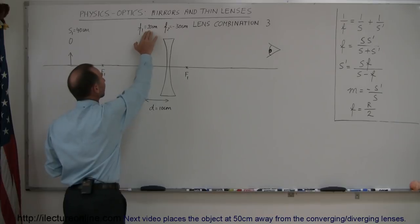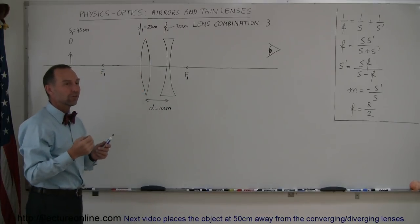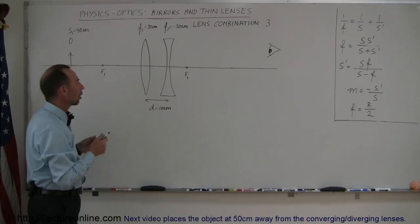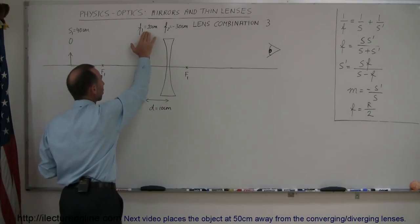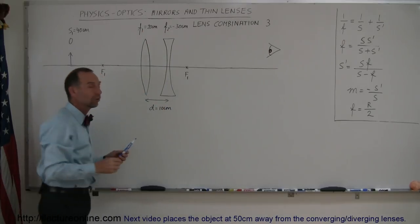The smaller the focal length, the stronger the lens is. The more it will cause the rays to bend.